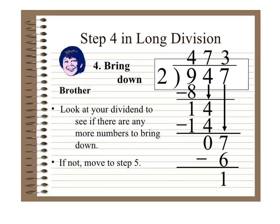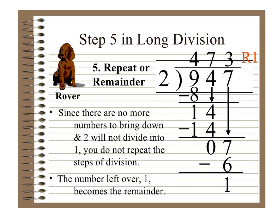Now bring down. Look at your dividend to see if there are any more numbers to bring down. If not, move to step 5. There are no more numbers to bring down, and 2 will not divide into 1. So you do not repeat the steps of division. The number left over, which is 1, becomes the remainder. Represent the remainder next to the quotient: 473 remainder 1.